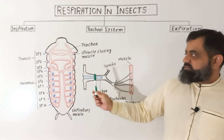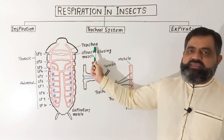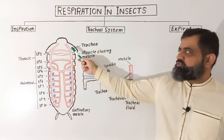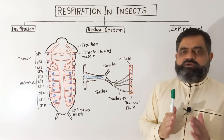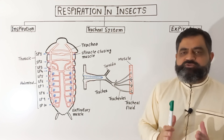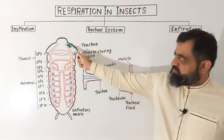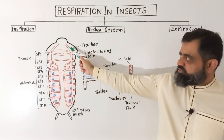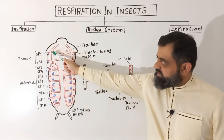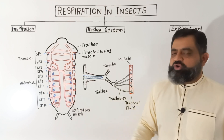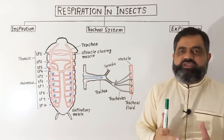These spiracles lead into a tube-like structure known as the main tracheal trunk, which runs from the anterior end of the body to the posterior end of the body. These tracheal trunks are also present on the lateral side of the body. As you can see, this is the first tracheal trunk which runs from anterior to posterior, and this is the second main tracheal trunk. All these spiracles open into these tracheal trunks.